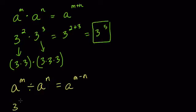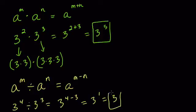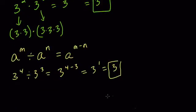So if we have 3 to the 4th divided by 3 to the 3rd, this equals 3 to the 4 minus 3, which equals 3 to the 1, or just 3.